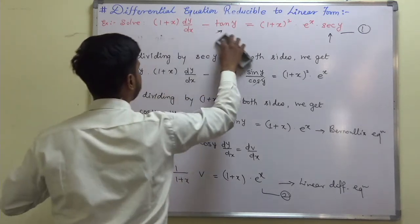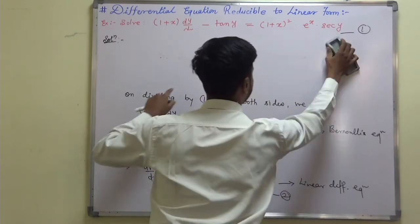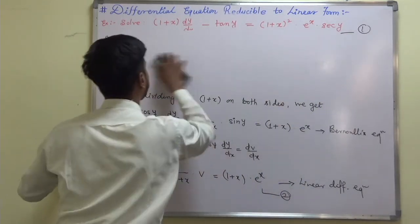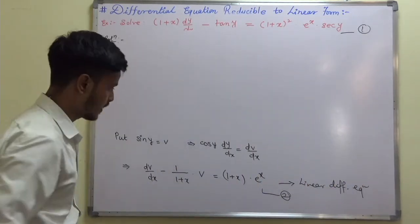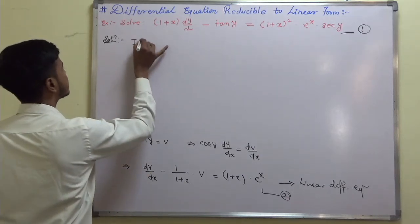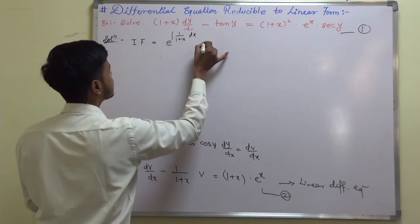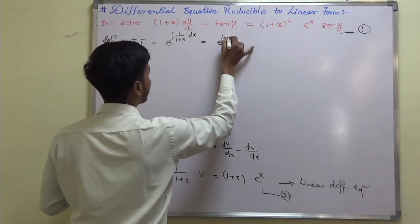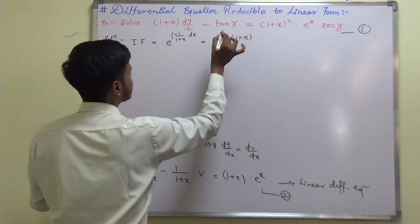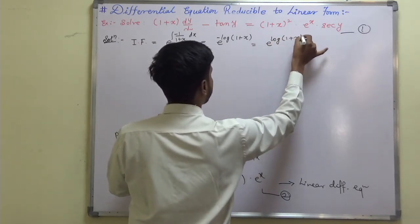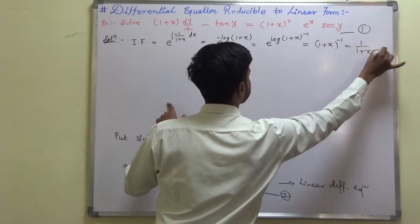Finding the integrating factor of this linear equation: the integrating factor = e^(∫−1/(1+x) dx) = e^(−log(1+x)) = e^(log(1+x)^(−1)) = (1+x)^(−1) = 1/(1+x). So 1/(1+x) is the integrating factor.